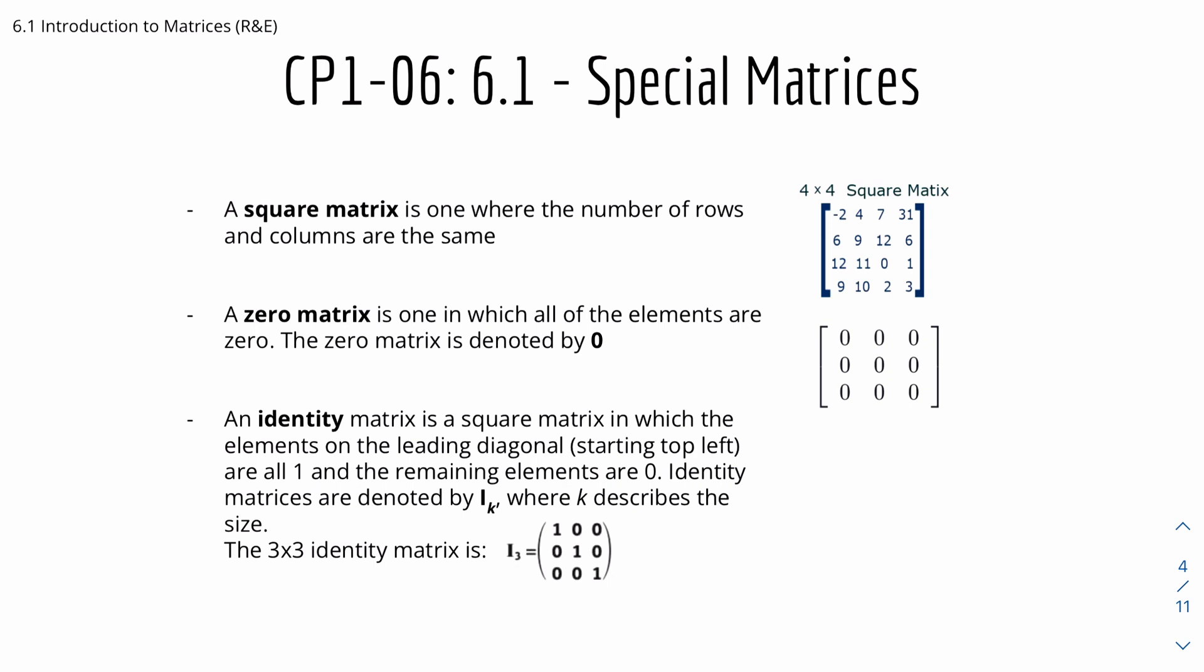And here we have some special matrices. So we have 3 that we'll look at. Number 1 is square matrix. A square matrix is one where the number of rows and columns are the same. So here we have a 4 by 4 square matrix and it could be like 2 by 2, 3 by 3, 4 by 4, 5 by 5 and so on. In the middle we have zero matrix. The zero matrix is one in which all of the elements are 0, and the zero matrix is denoted by the symbol 0 like so. And the third one is an identity matrix. An identity matrix is a square matrix in which the elements on the leading diagonal starting from top left right here are all 1 and the remaining elements are 0. Note that the identity matrices are denoted as i subscript k where k describes the size of the matrix.